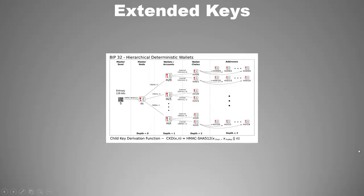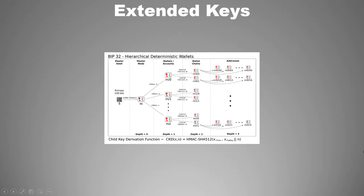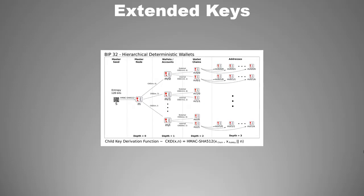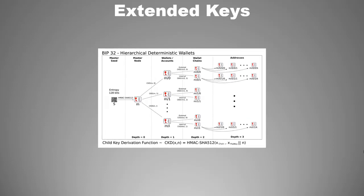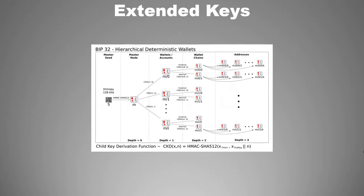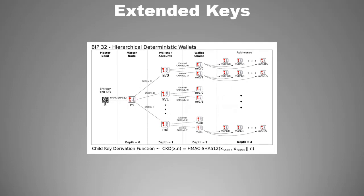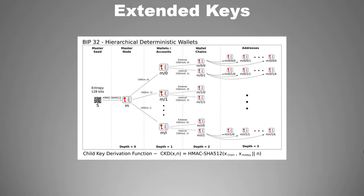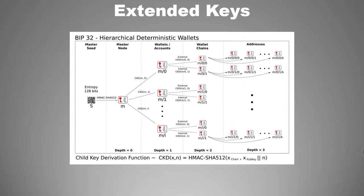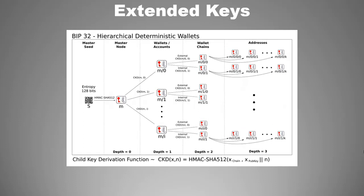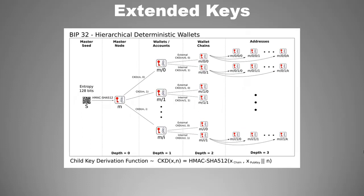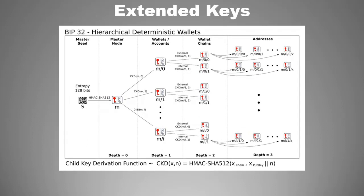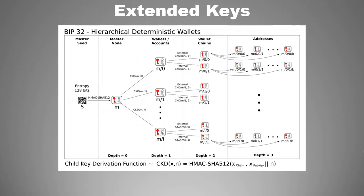In the previous chapter, we learned that HD wallets derive a tree-like structure of keys from a single seed. In fact, since mnemonic code words have become popular, it is more logical to say that this tree-like structure of keys is produced from the mnemonic code words. Irrespective, we will refer to this initial entropy as seed.